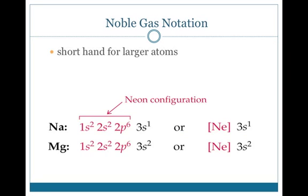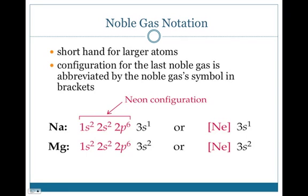Then the noble gas configuration is basically when you have giant atoms that maybe beyond about row four or five, the electron configuration notation gets really long. And so instead of writing all of that out, you go back to the last noble gas and write the valence electrons that came after it. So for sodium, instead of writing 1s2, 2s2, 2p6, you would just write neon and 3s1. And you can do the same thing for magnesium.